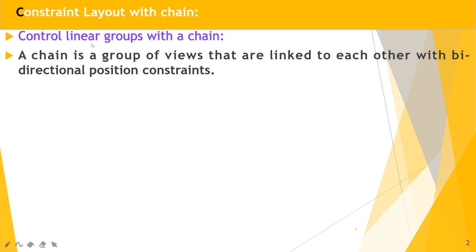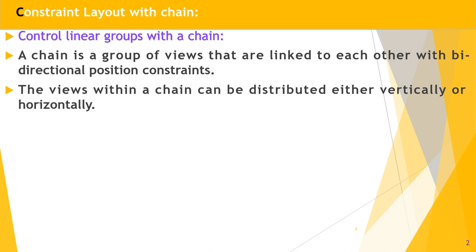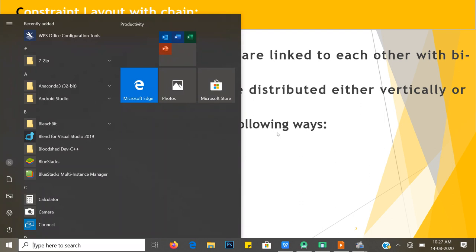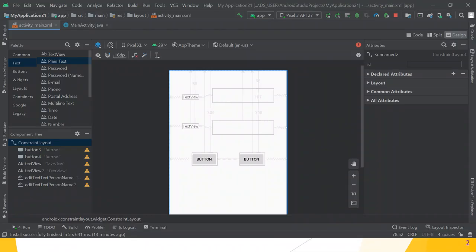Control Linear Groups with a Chain. A chain is a group of views that are linked to each other with a bidirectional position constraint. The views within the chain can be distributed either vertically or horizontally. Chains can be styled in one of the following ways. Before that we will see on Android Studio what views look like horizontally and how we can make chains horizontally and vertically.